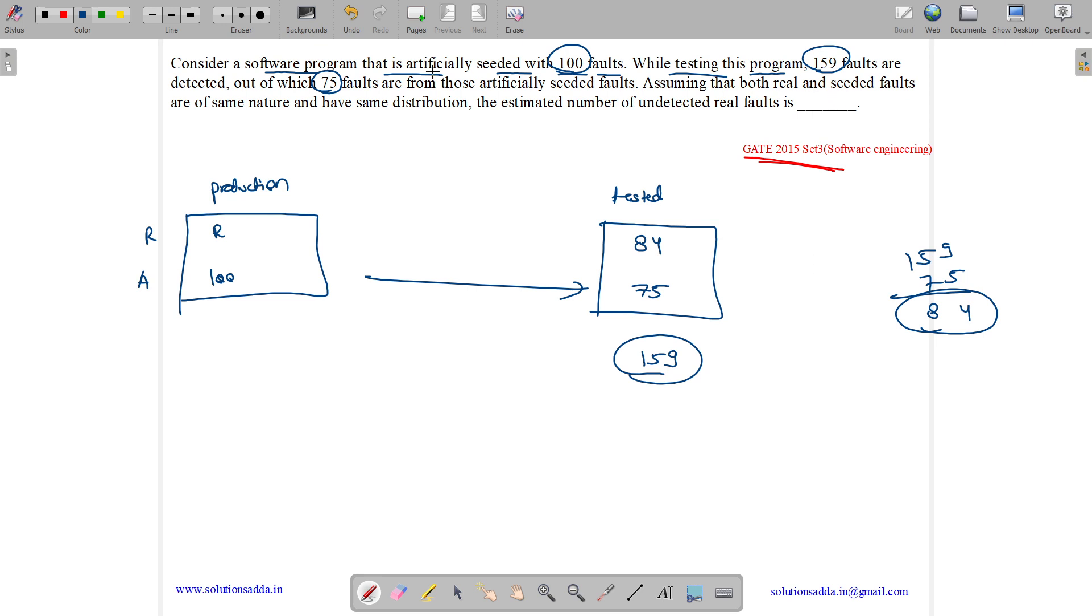Assuming that both real and seeded faults are of same nature and have same distribution, which means they have the same probability of being identified. Let us see what percent of artificial faults are identified. We have 75 by 100 into 100, which means 75 percent faults are identified.